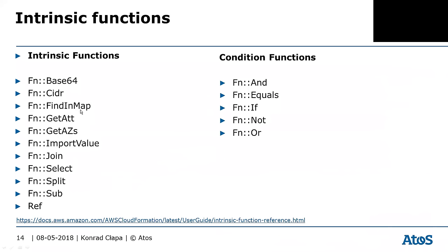FindInMap allows you to get an attribute from the mapping matrix that you define in the Mappings section. GetAtt allows you to get attributes of resources that you have already provisioned — for example, to get the IP address of an EC2 instance you already provisioned. You can also get Availability Zone and import values from other templates.